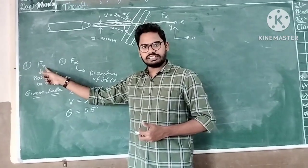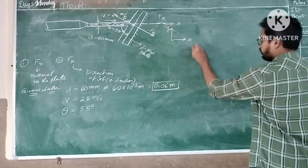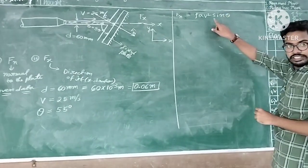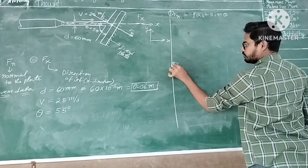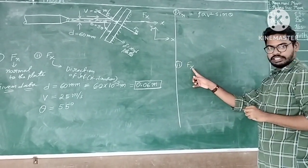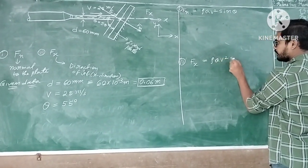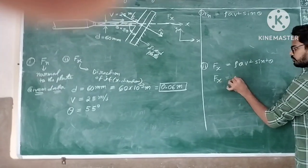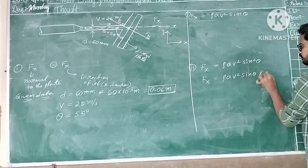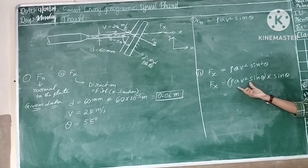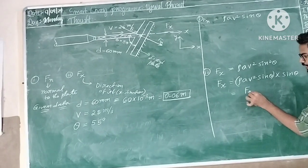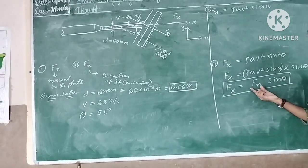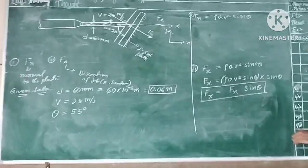The formula for Fn, the force exerted by the jet on the plate in the direction normal to the plate, is: Fn = ρAV²sinθ. For Fx, the force in the direction of the jet: Fx = ρAV²sin²θ, which can be written as Fx = Fn·sinθ. So first we find Fn, then substitute to get Fx.